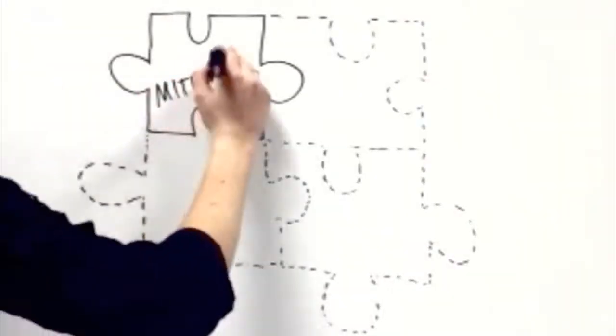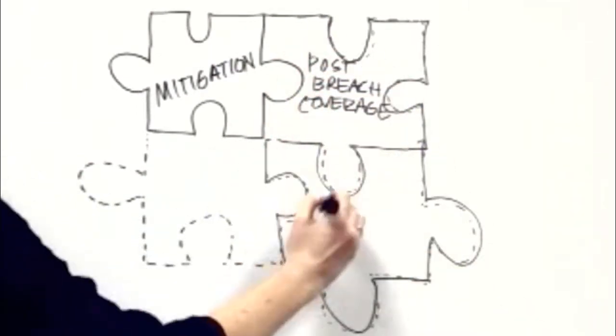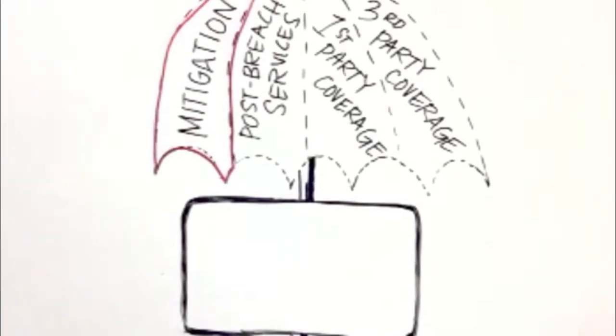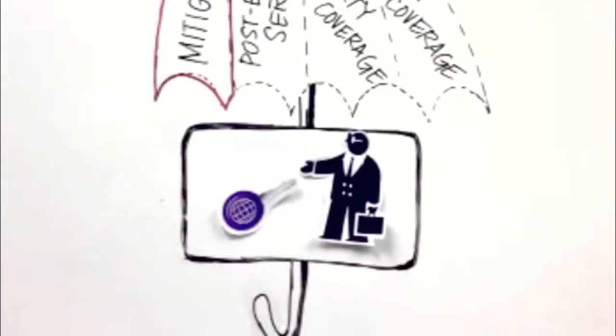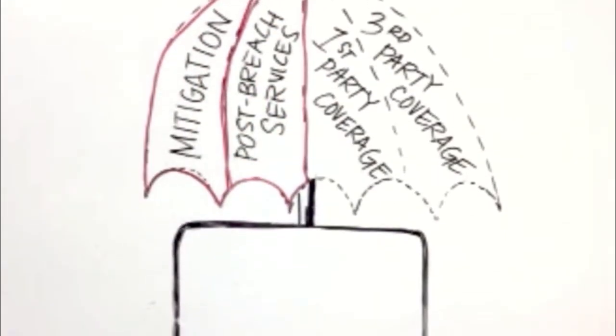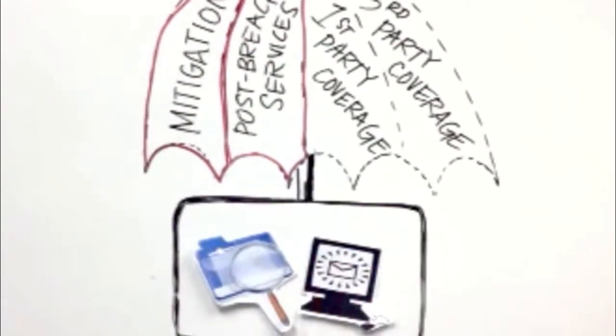Gilman Insurance offers a comprehensive package of data breach coverage and services. It includes mitigation, like pre-breach preparation, training, personalized consulting, and access to a data breach website. Post-breach services include damage assessment, crisis management, and consumer notification assistance.